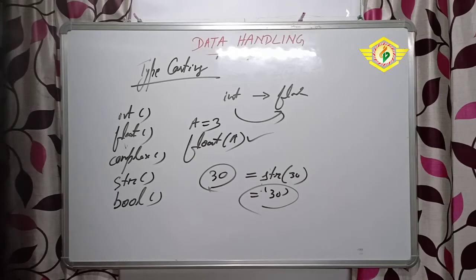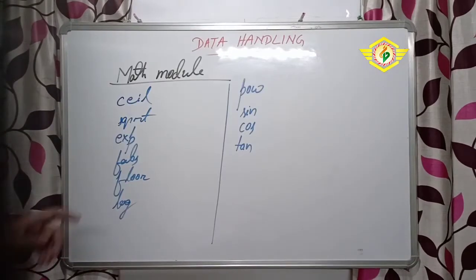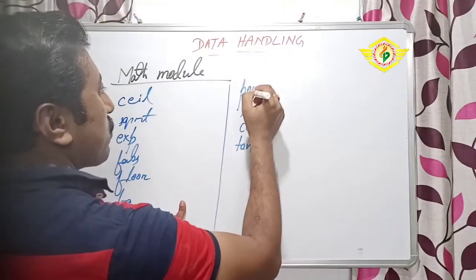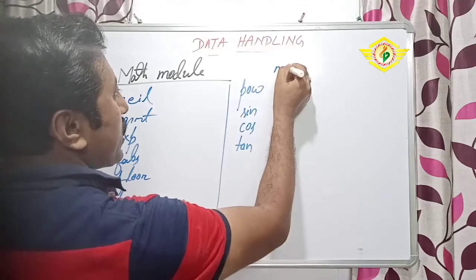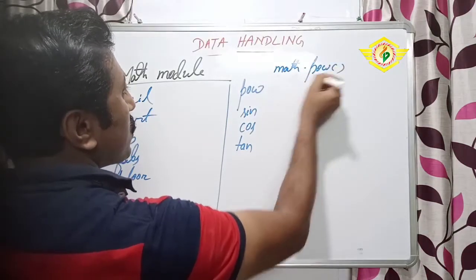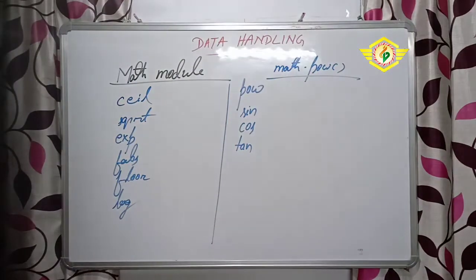Now we will discuss some math modules in Python. I will show you some examples of mathematical functions in math modules. Whenever we are writing these functions, you have to use the module name first. One example - suppose I want to use pow, you must write math.pow then after that you write its arguments.